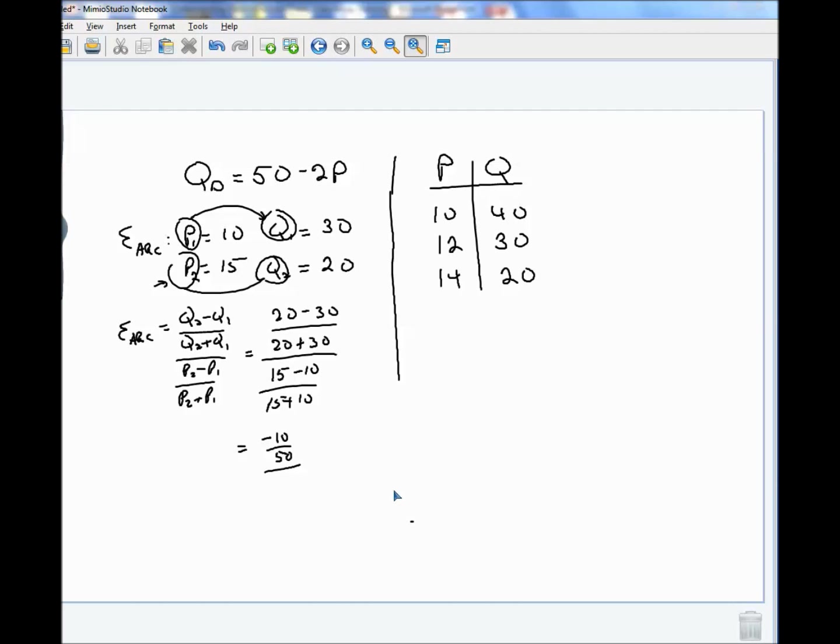All over 15 minus 10 is 5. All over 15 plus 10 is 25. Now taking that denominator, inverting, and multiplying, I get minus 10 over 50 times 25 over 5. Now let's see. Some of this cancels. That 5 will go into that 10 two times. And that 25 will go into that 50, value equal to minus 1 over 1. Or 1. Minus 1.